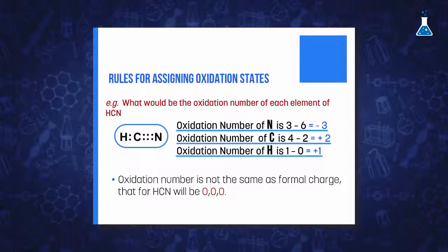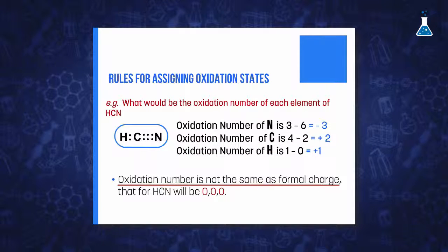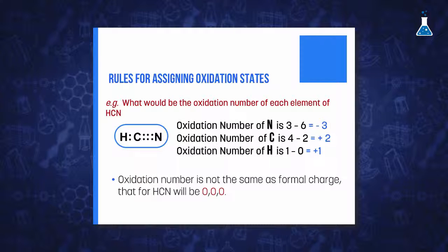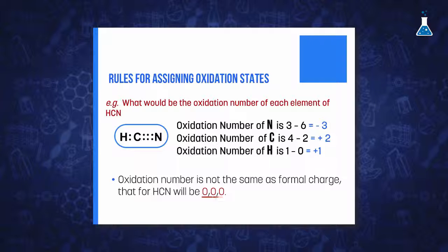It is important not to confuse oxidation number with formal charge. The formal charge is calculated as the difference between the number of valence electrons and the electrons assigned to the atom. The electrons assigned are the sum of the lone pair electrons and half of the electrons shared in bonding pairs. In our HCN example, the formal charges are all 0.